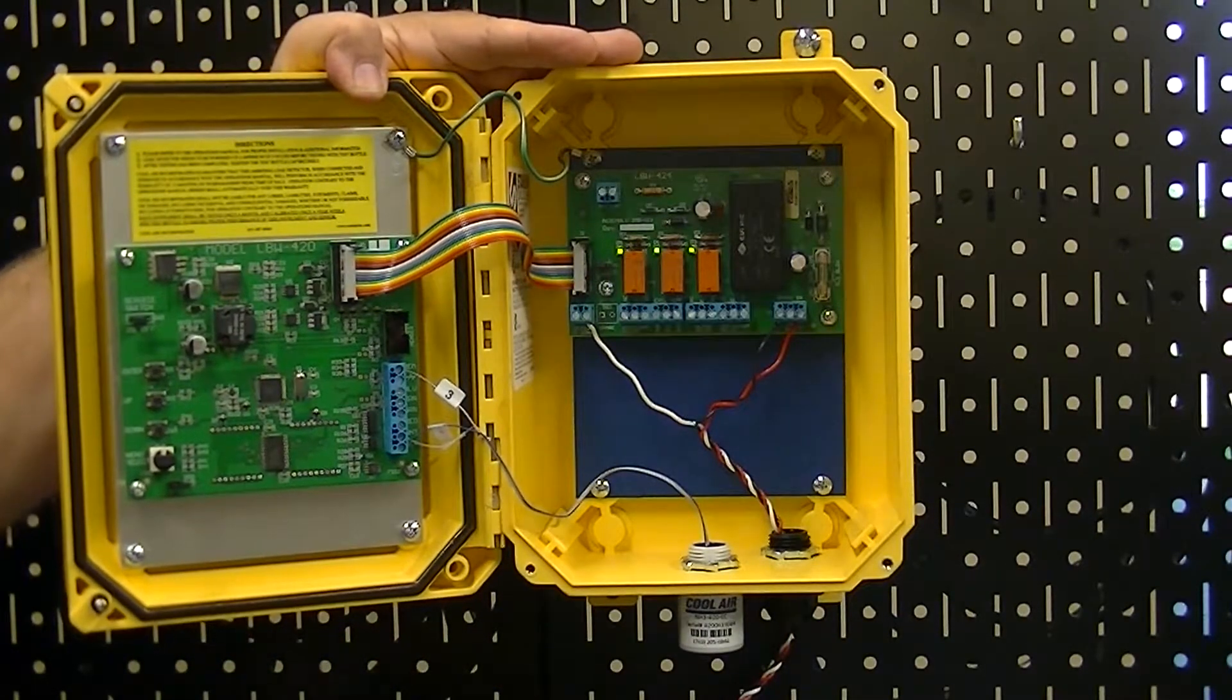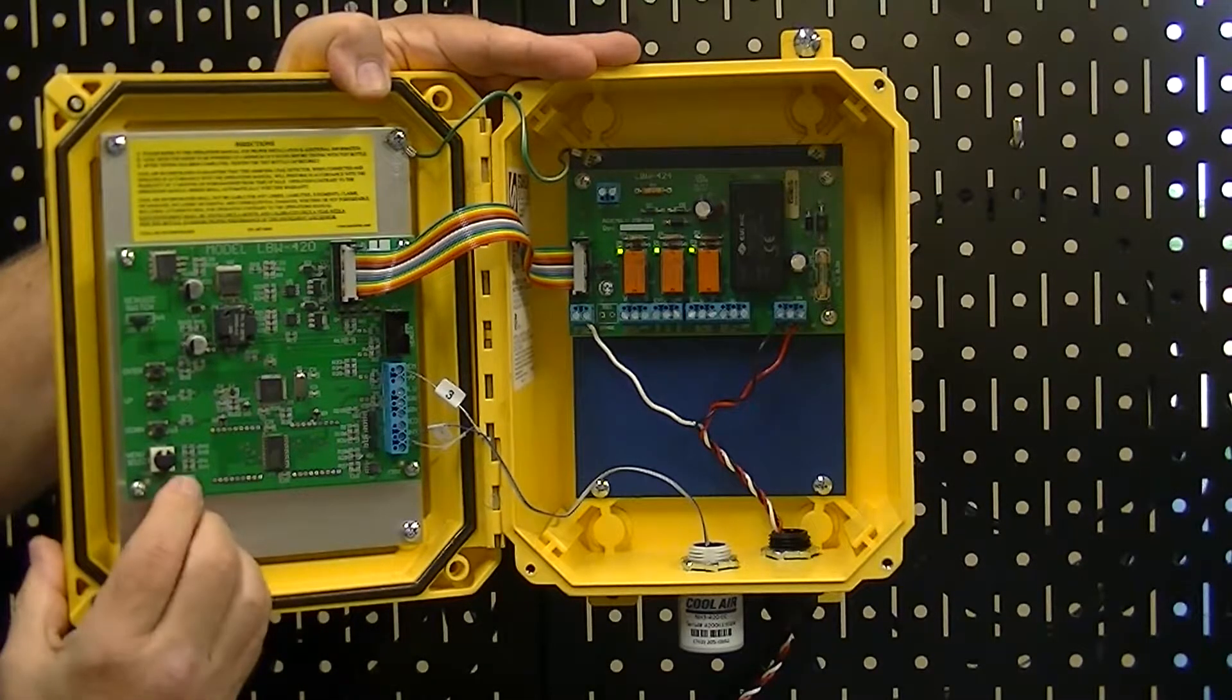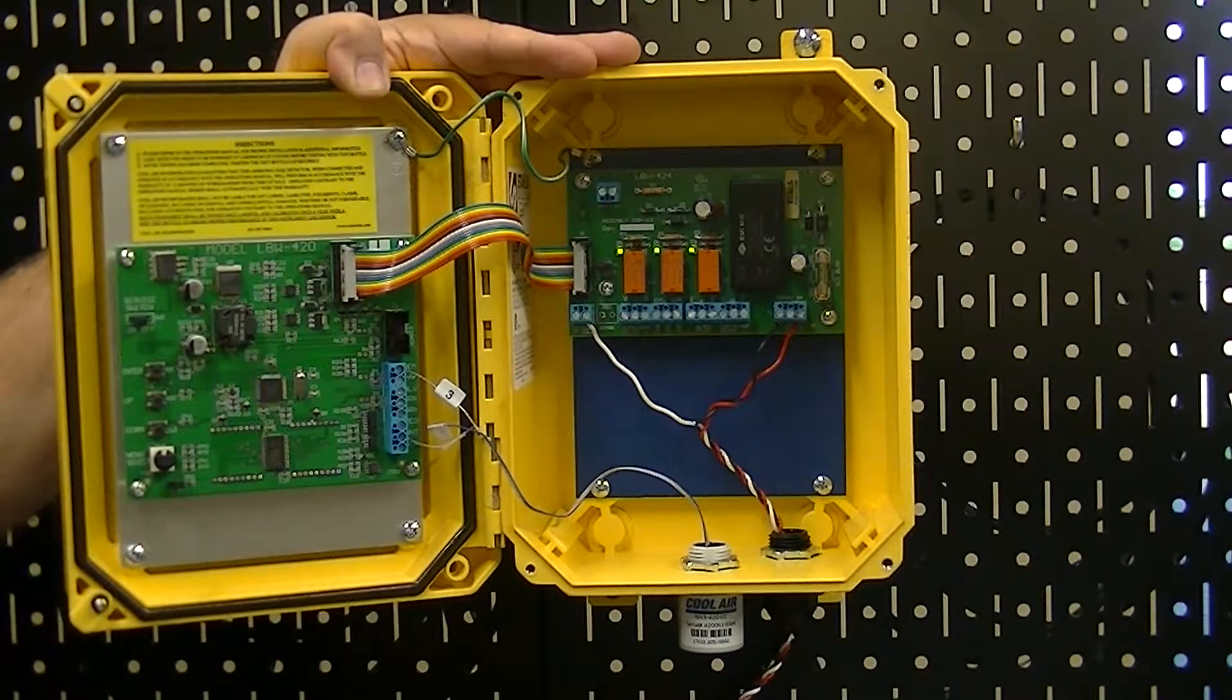First thing you want to do when calibrating the detector with the electrochemical sensor is to put it in program mode by putting the set one jumper on.